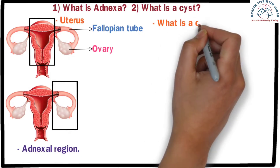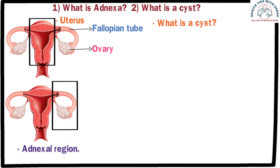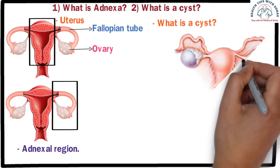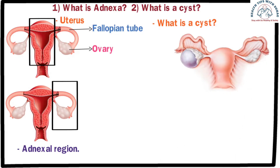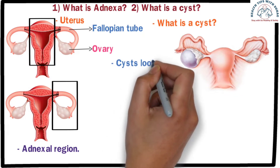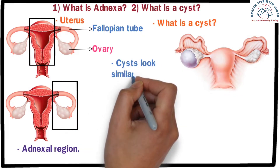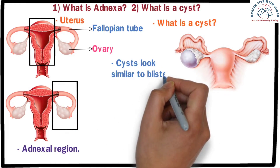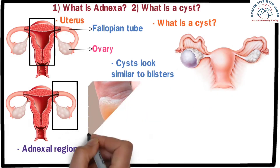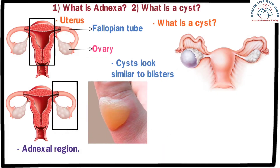Now let's discuss what a cyst is. A cyst is a sac-like structure formed by the accumulated collection of fluid, which can contain water, pus, air, or other substances. Cysts look similar to blisters, especially when they form on skin after a burn, or if you were to fill a condom with water, it would appear somewhat similar.